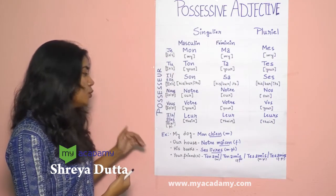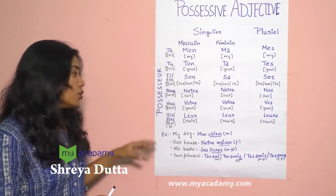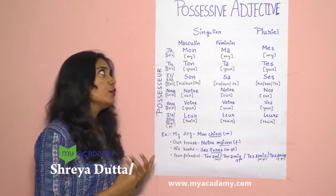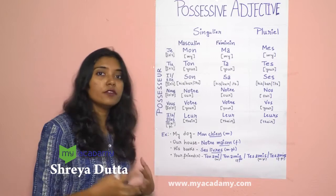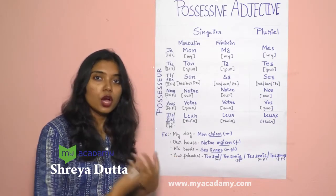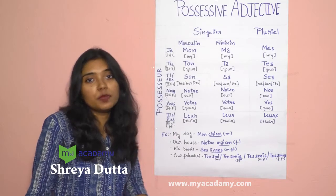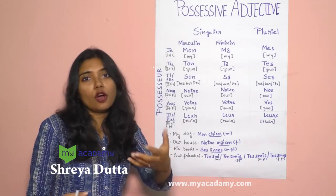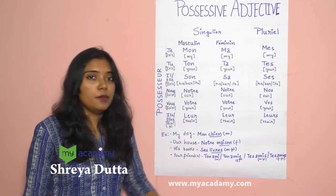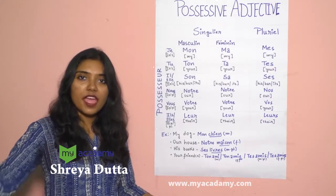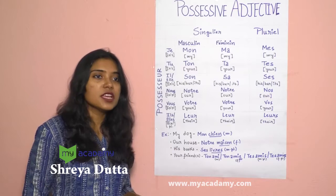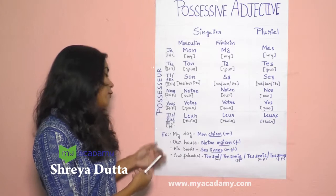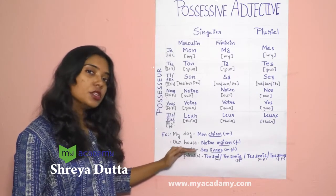Now we'll move forward to examples. We mostly use adjective possessif when we describe our family, our house, or anything that belongs to us. It can be your friend, my friend, our family, my family, their country — anything. In descriptions, we most commonly use adjective possessif.